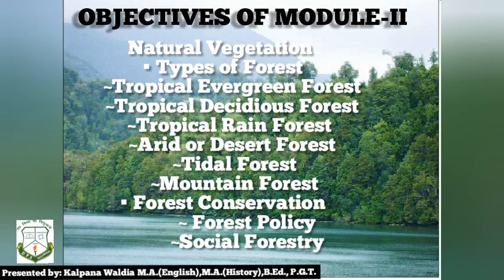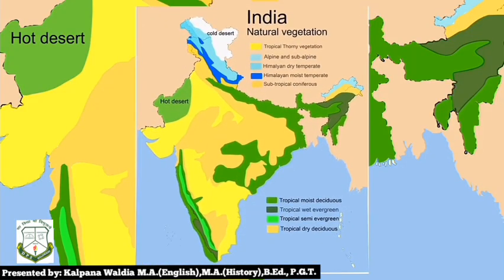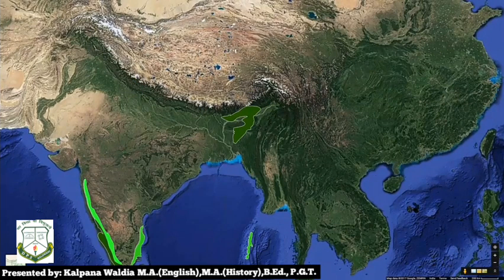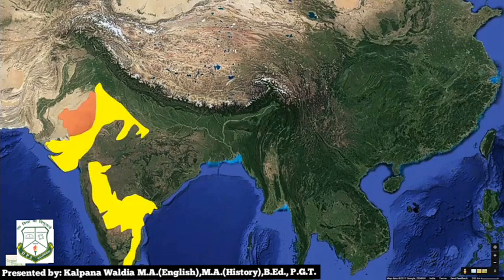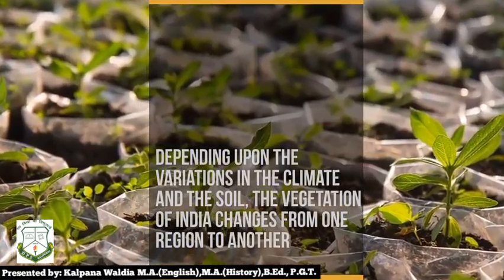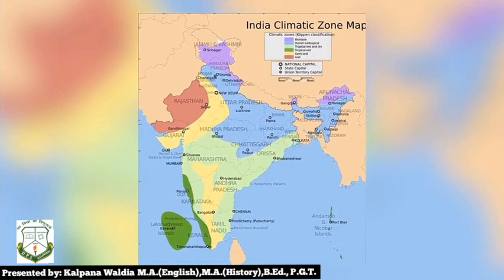So let's begin this module. The first topic is types of forests. India is a landmass of great variety of natural vegetation. Himalayan heights are marked with temperate vegetation; the Western Ghats and Andaman and Nicobar Islands have subtropical rainforest. The deltaic regions have tropical evergreen forest and mangrove trees. The deserts and semi-desert areas of Rajasthan are known for cactus and thorny bushes. All these depend upon variation in climate and type of soil.